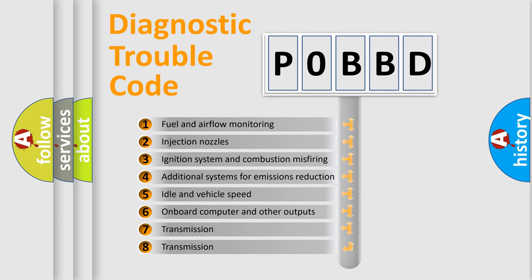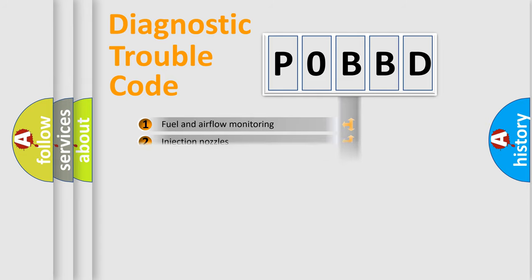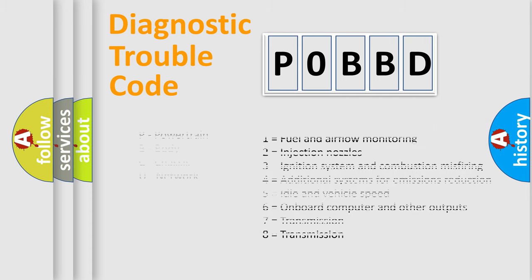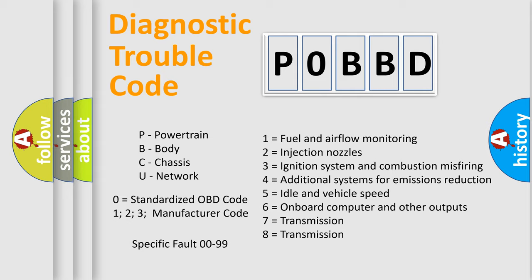The distribution shown is valid only for the standardized DTC code. Only the last two characters define the specific fault of the group. Let's not forget that such a division is valid only if the second character code is expressed by the number zero.